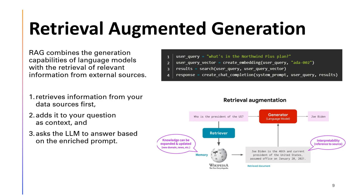The most popular technique is Retrieval Augmented Generation, also referred to as RAG. RAG combines the generation capabilities of language models with the retrieval of relevant information from external sources. It retrieves information from your data sources first, then adds it to your question as context, and asks the LLM to answer based on the enriched prompt. RAG enables models to access the latest information from databases or documents, particularly useful for topics requiring current knowledge or domains where information frequently changes. By relying on retrieved documents, RAG reduces the likelihood of the model generating incorrect or fabricated information — known as hallucinations — leading to more reliable outputs.